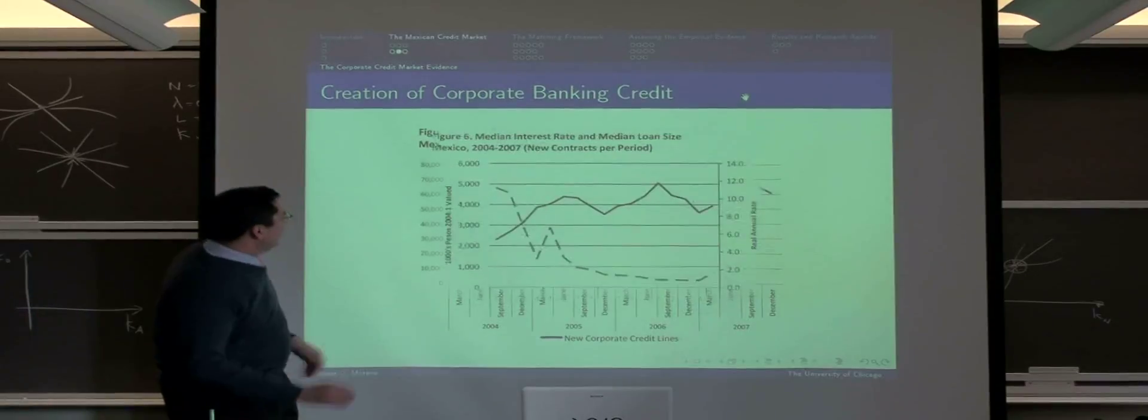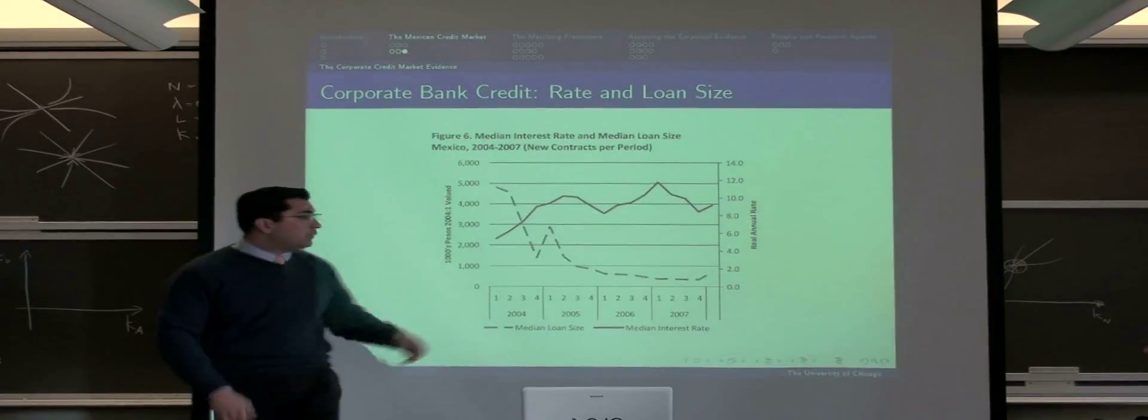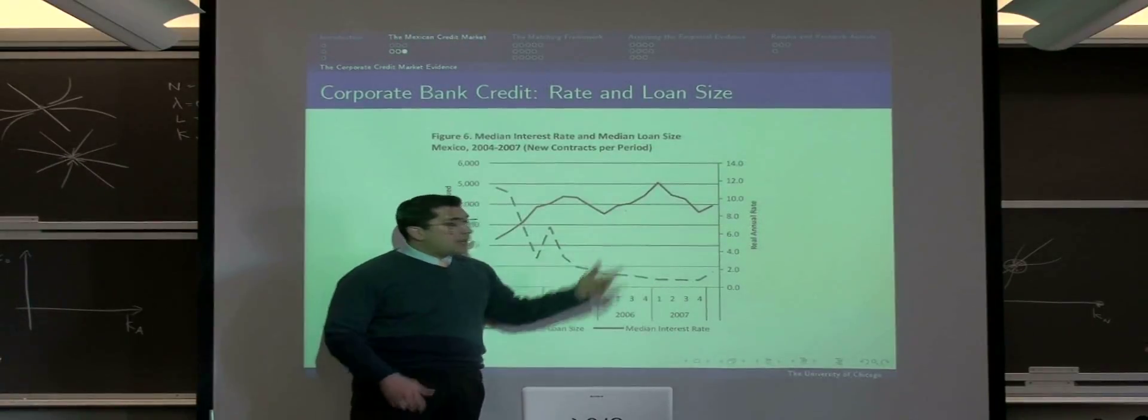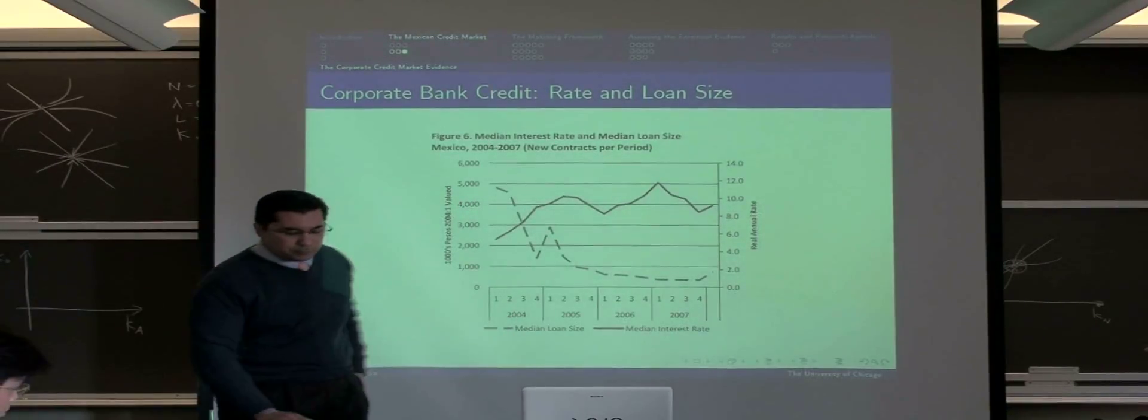So, what is going on? What we observe in the data is that the typical contract's loan size is going down, and the associated interest rate is going up.